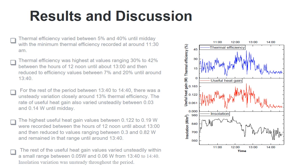The highest useful gain values were between 0.122 and 0.19, which occurred around 12 noon to 1 o'clock. There was a reduction to about 0.3 to 0.82 and it remained there until 13:40. The rest of the useful heat gain values varied unsteadily in small ranges of 0.05 and 0.06 within 1:40 and 2:40.